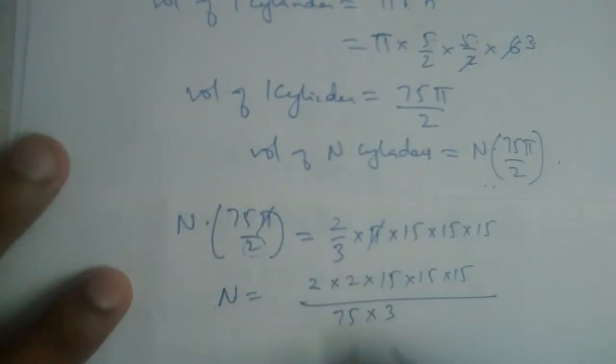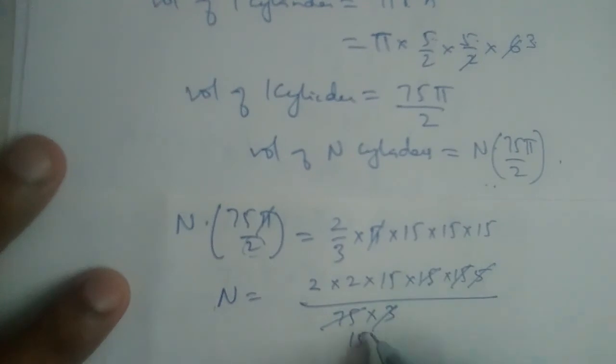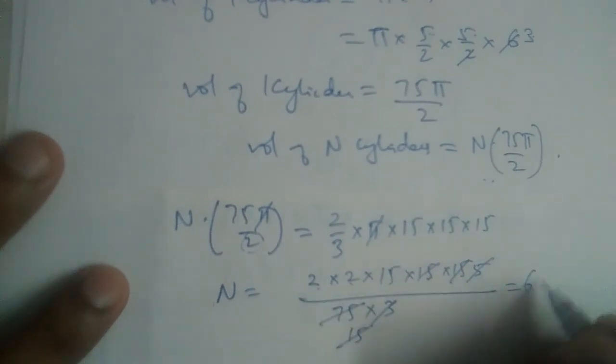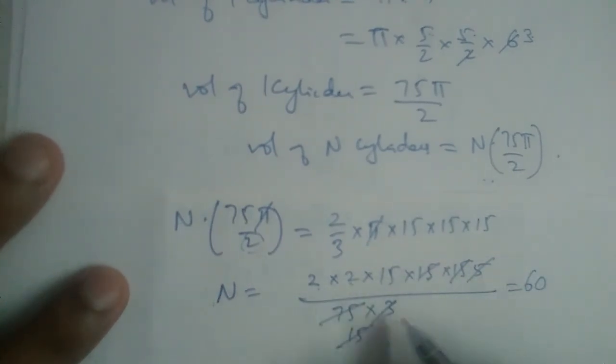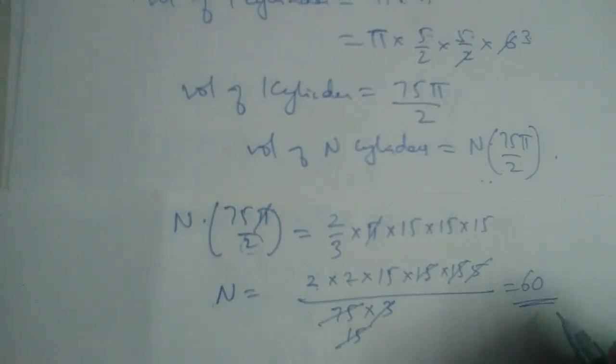Now the 3 and 15 will cancel. After simplification, 15 becomes 30, then 60. So the total is 60 bottles that can be filled.